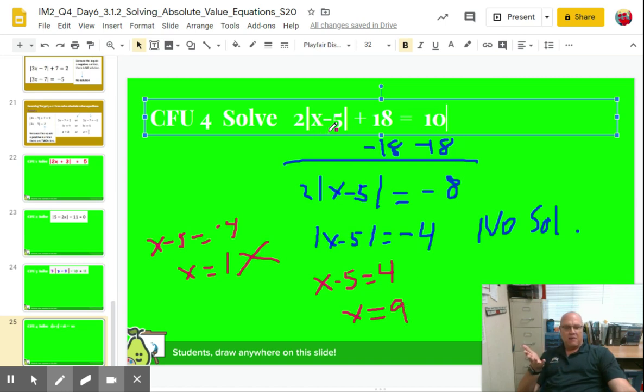Let's substitute that in. Nine minus five is four. Absolute value of four is four. Four times two is eight. Eight plus 18 is 26. Is 26 equal 10? No good.